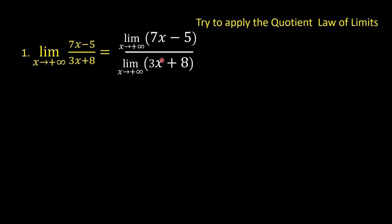In finding the limits of polynomials, we cancel all the terms in the polynomial except the leading term. So we cancel negative 5 and cancel positive 8. What we have in the numerator is the limit of 7x as x approaches positive infinity, and in the denominator, the limit of 3x as x approaches positive infinity.